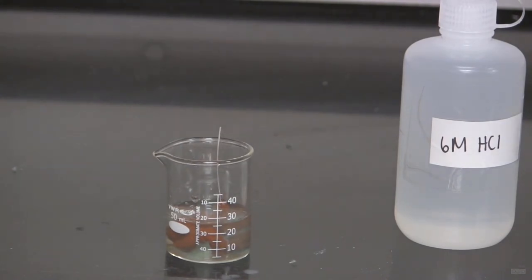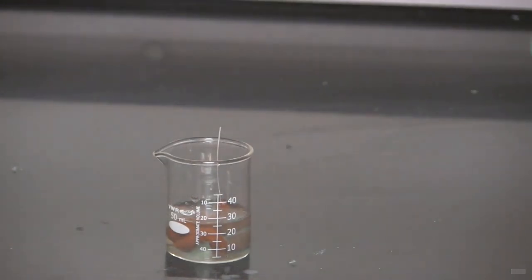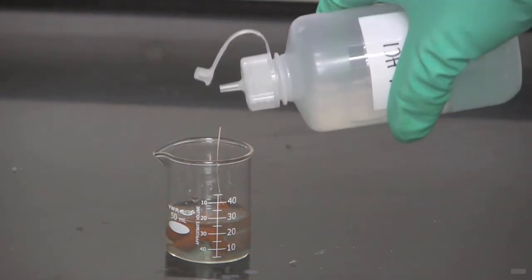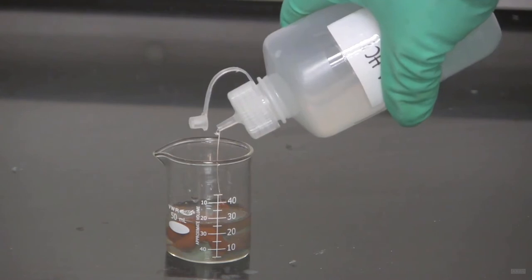So it's been 30 minutes. The solution has gone pretty much colorless now. I'm going to add five drops of six molar HCl. And that will have the effect of dissolving any aluminum salts that might have formed.